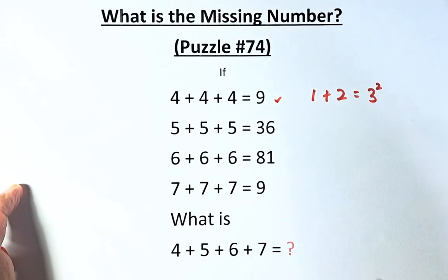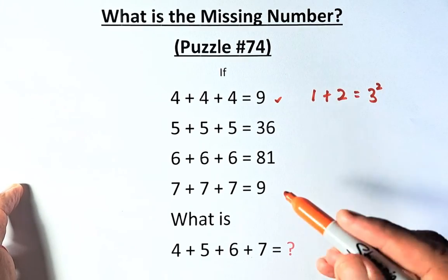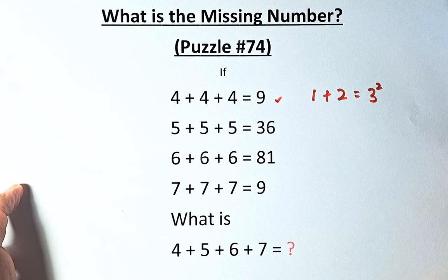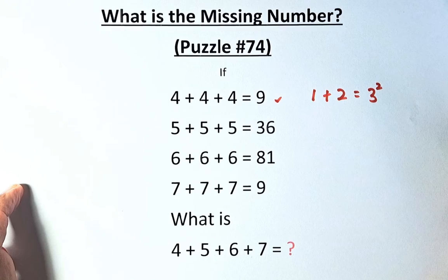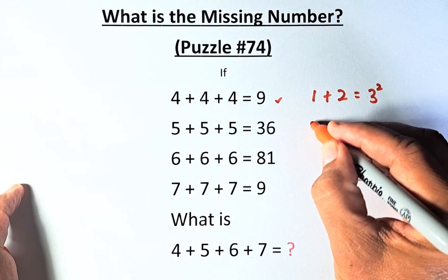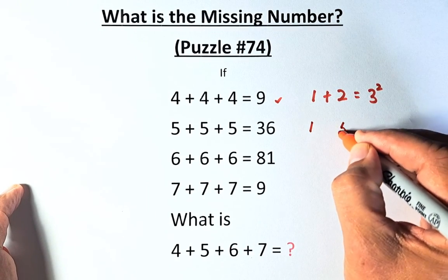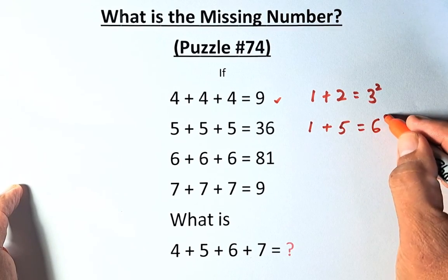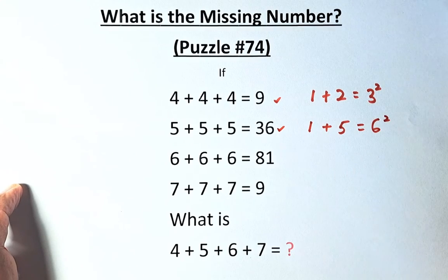If you look at all the columns and the last number, 9, 36, 81, and 9, they are all square numbers. Again, the second row, we have 5 plus 5 plus 5. So 5 plus 5 plus 5 is going to be 15. We're going to add 1 and 5. 1 plus 5 is going to be 6, and you square the answer. That will give us 36.